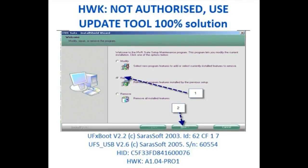HWK Not Authorized Use Update Tool 100% Solution. UFx Boot B2.2, Sarasoft 2003 ID: 62C, F17 UFs underscore USB B2.6, Sarasoft 2005 S/N: 60,554 ID: C5F33FD841,676. HWK A1.0 for Dash Pro 1.